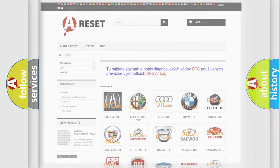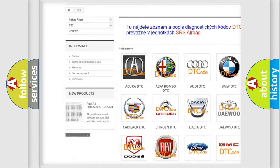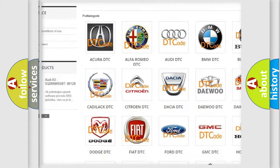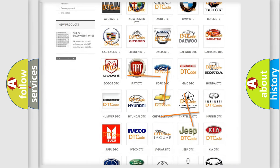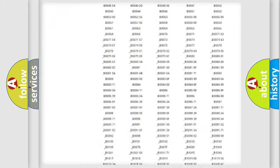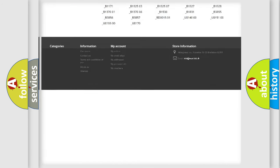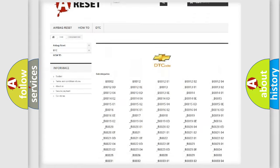Our website airbagreset.sk produces useful videos for you. You do not have to go through the OBD2 protocol anymore to know how to troubleshoot any car breakdown. You will find all the diagnostic codes that can be diagnosed in Chevrolet vehicles.